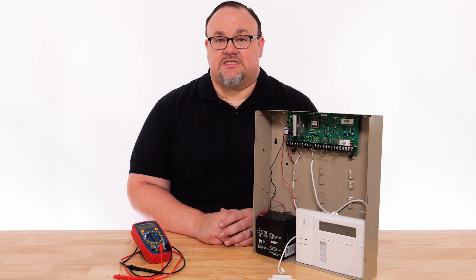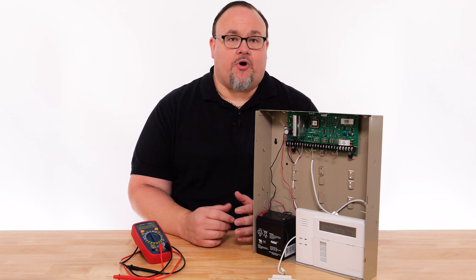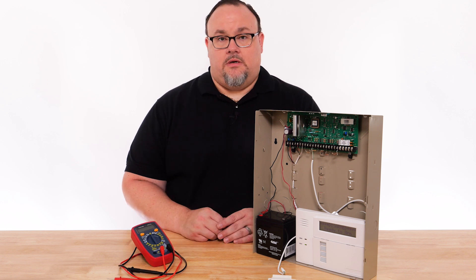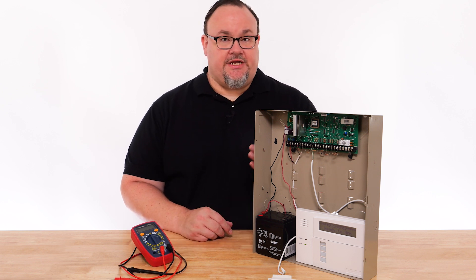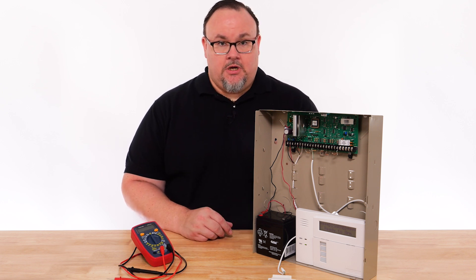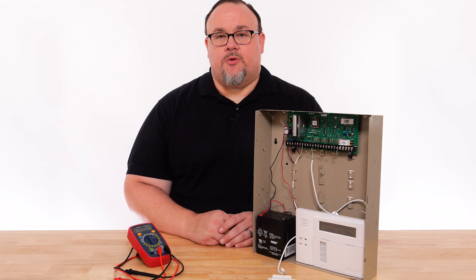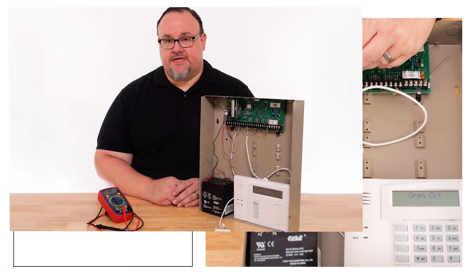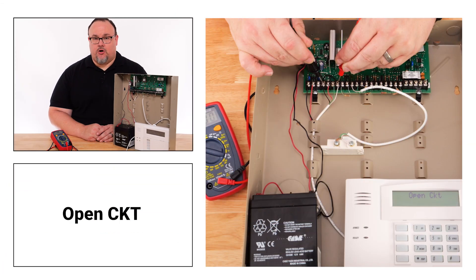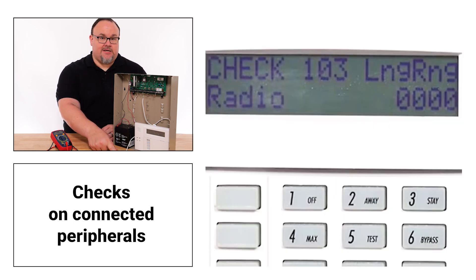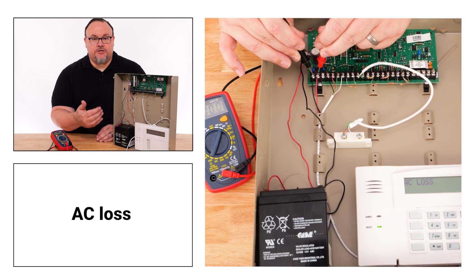The reasons behind these problems could be due to electrical problems, poor wiring connections, or damaged devices. In this video, I'll be using a common security system to show how to troubleshoot with a multimeter. Some of the most common reasons for service calls on security systems are open circuits shown on keypads, checks on zones, checks on connected peripherals, and AC loss.